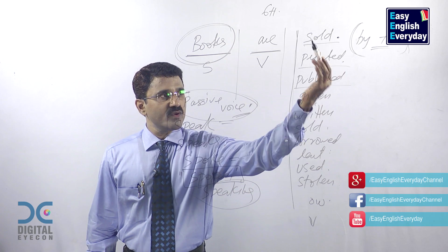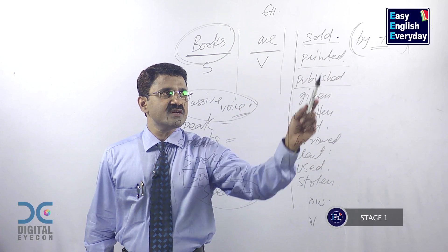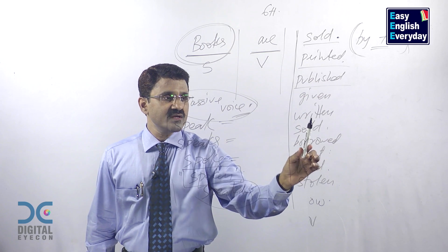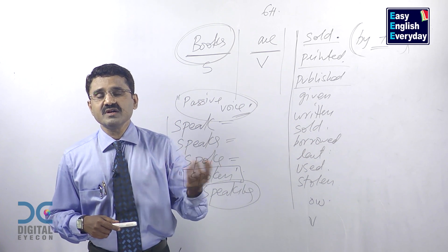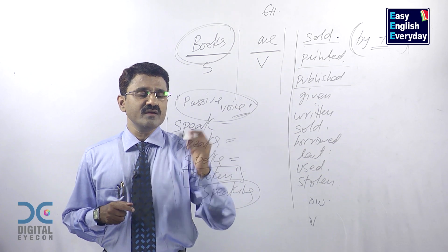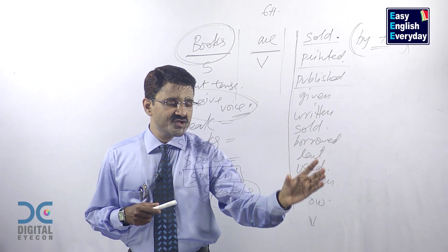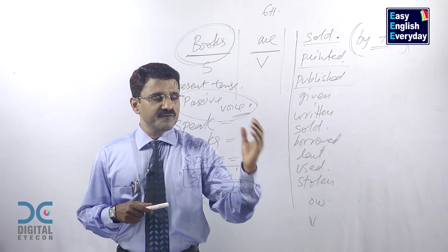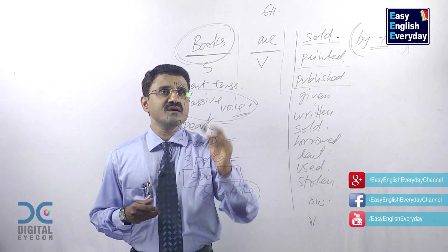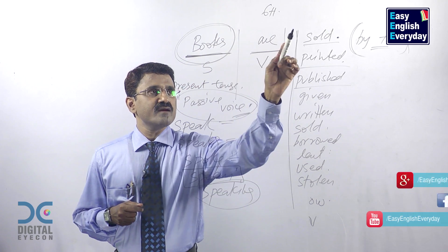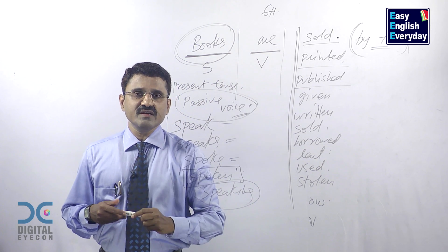Books are sold by them. Books are printed by them. Books are published by them. Books are given by them. Books are written by them. Books are borrowed by them. Books are lent by them. Books are used by them. Books are stolen by them. This is called present tense passive voice. Your progress depends on collecting a large number of past participle forms. If you add them to a living or nonliving subject, you can make more sentences. Books is a nonliving thing — we used these past participle forms to make sentences. Now let us make one sentence for a living subject.